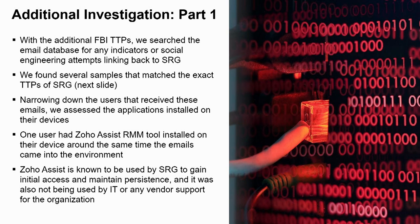With those additional TTPs from the FBI, we went back and started to search through the environment. We started to look for anything matching the Duolingo or Masterclass phishing, any traffic that could be in their email system. We pretty much matched the exact threat vector that this group uses to the client. After we found this, we found phishing emails to a handful of users. We also then found — after narrowing it down — Zoho Assist, an RMM tool that this group is also known to use, was installed on one of the user's devices. That's what they used to maintain persistence within the environment and ultimately extract the data.